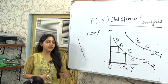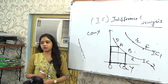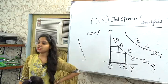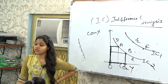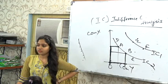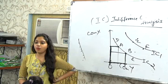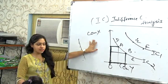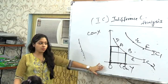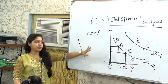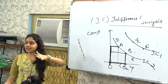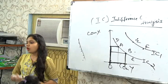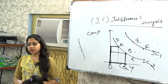Point number two: indifference curve is downward sloping. Why is it downward sloping? Because of the inverse relationship between two commodities. If you want to consume more of X, forego some amount of Y. And if you want to consume more of Y, forego some amount of X. You cannot increase both commodities at the same time — increase one, decrease the other.